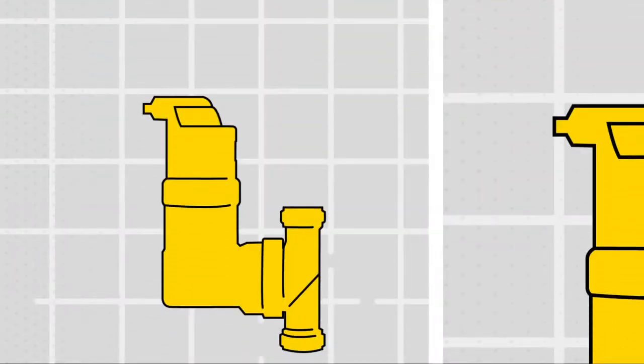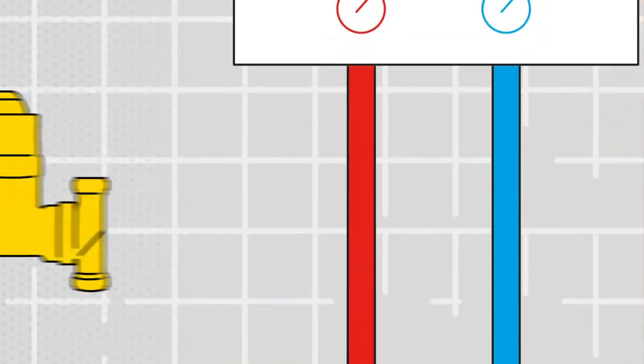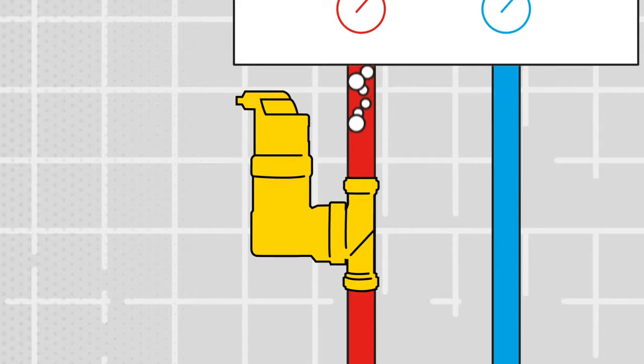A de-aerator like the Spyrovent RV2 uses special venting technology to continually remove air from the heating system. It's fitted on the flow pipe so it removes gases that come out of the system water as it's heated by the boiler. This reduces the amount of air circulating around the system and lowers corrosion.